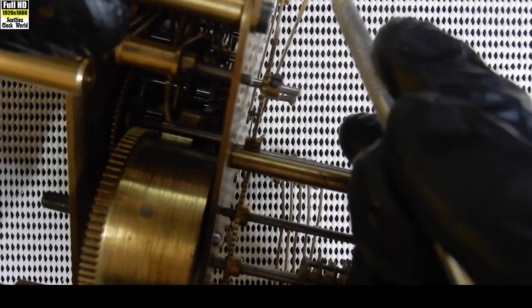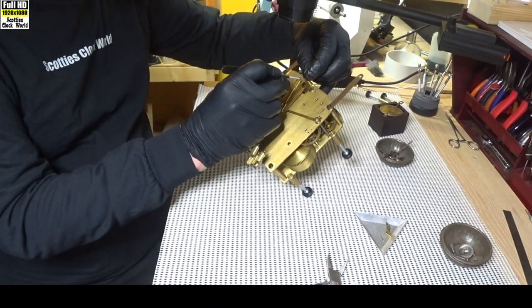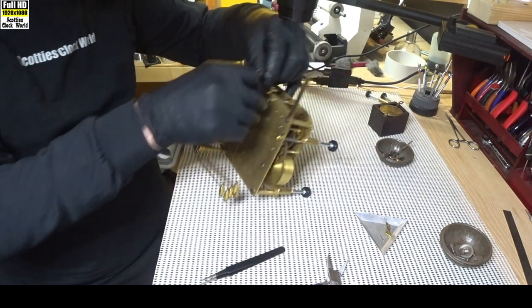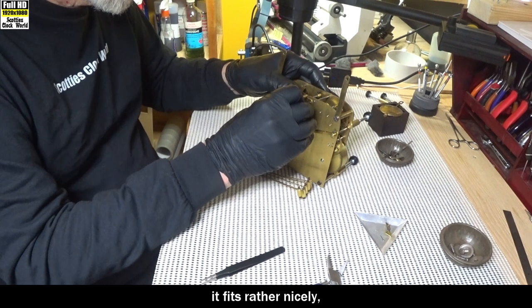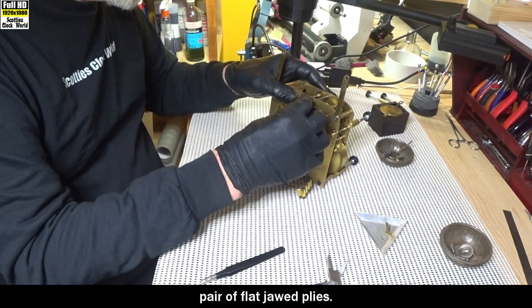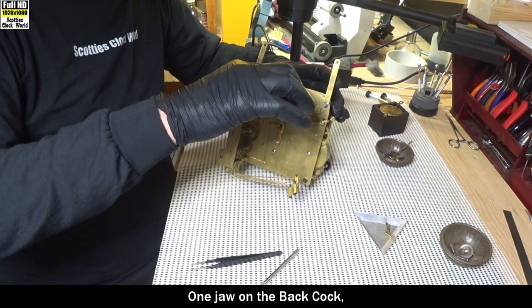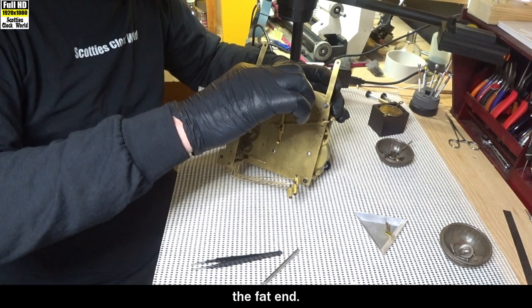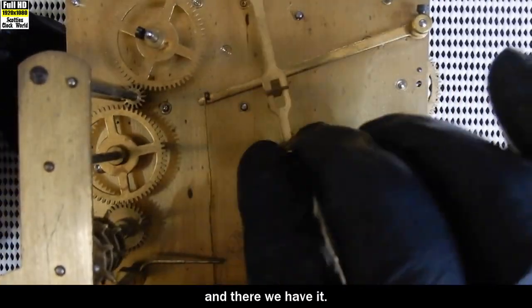Align the hole, dentist probe once again. That seems to have done a pretty good job. Now for our tapered pin. Push it into the hole. It fits rather nicely. A pair of flat jaw pliers. One jaw on the back cock, the other on the end of the tapered pin, the fat end. Push it in slightly. And there we have it.